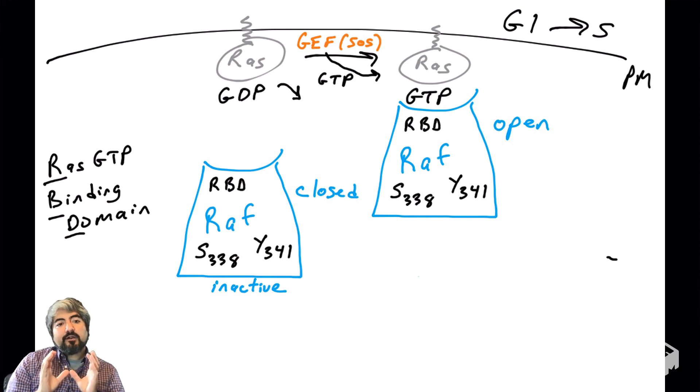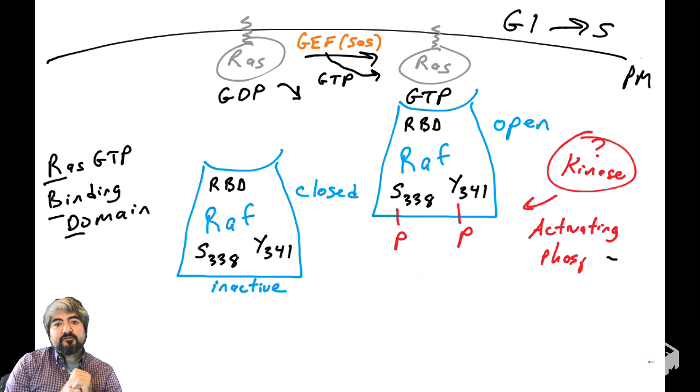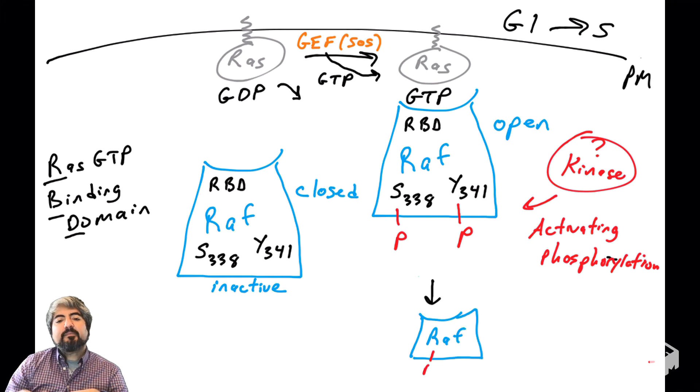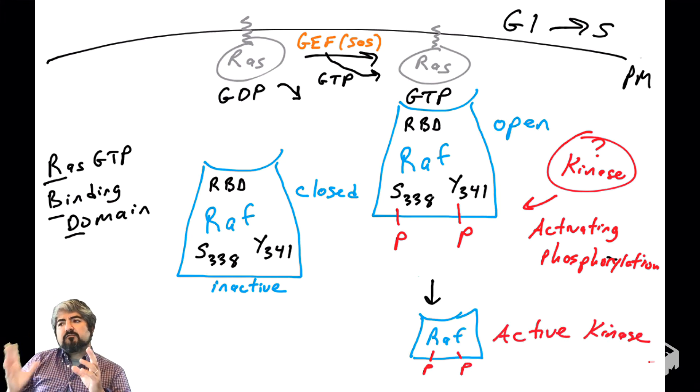RAF, using its RBD RAS GTP binding domain, binds. That binding, that protein-protein interaction between RAS GTP and RAF, causes a change in RAF's three-dimensional conformation. When RAF's conformation changes, it is accepting of phosphorylation from a kinase, and that serine and that tyrosine become phosphorylated. When they're phosphorylated, that helps activate RAF. You've got these two things that occur: RAF binding to RAS GTP, which changes the conformation, which allows it to get phosphorylated. Now RAF can detach from RAS GTP and go into the cytoplasm and phosphorylate its substrate.